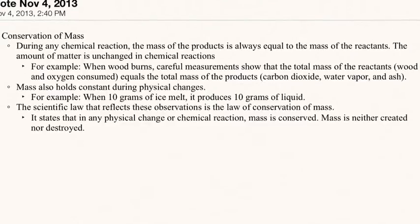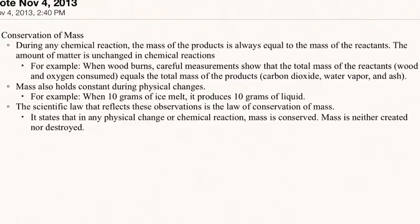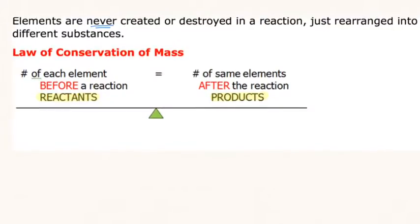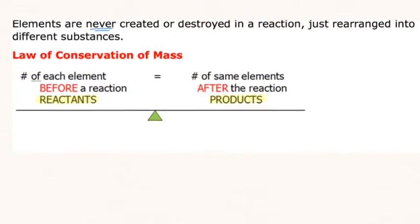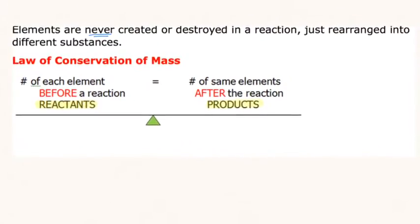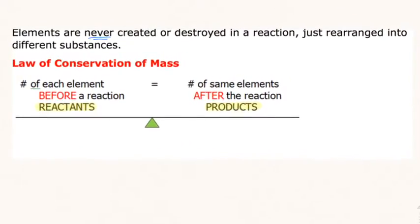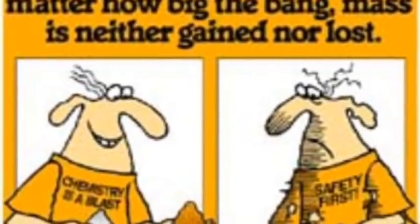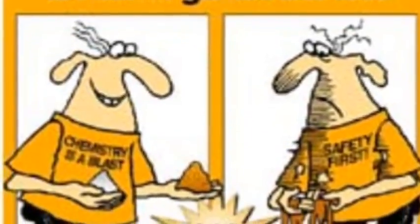The scientific law that reflects these observations is the law of conservation of mass. It states that in any physical change or chemical reaction, mass is conserved — mass is neither created nor destroyed. Elements are never created or destroyed in a reaction, just rearranged into different substances. In chemical changes, no matter how big the bang, mass is neither gained nor lost.